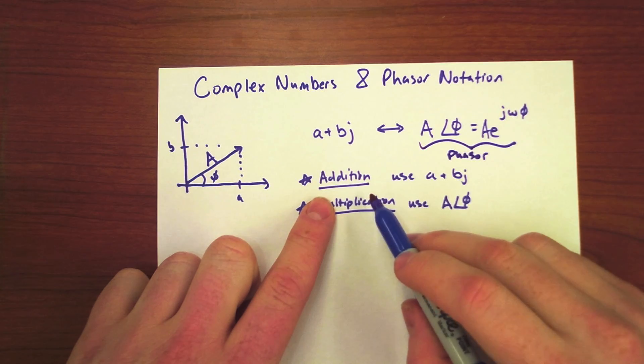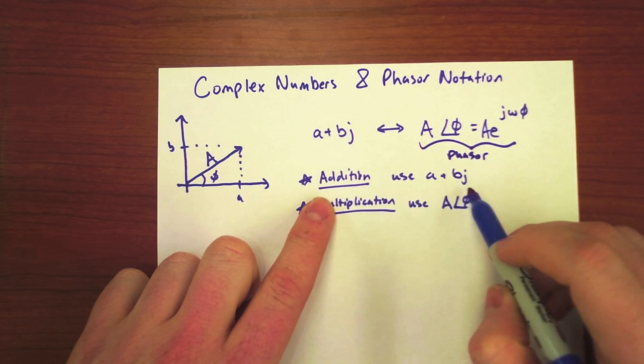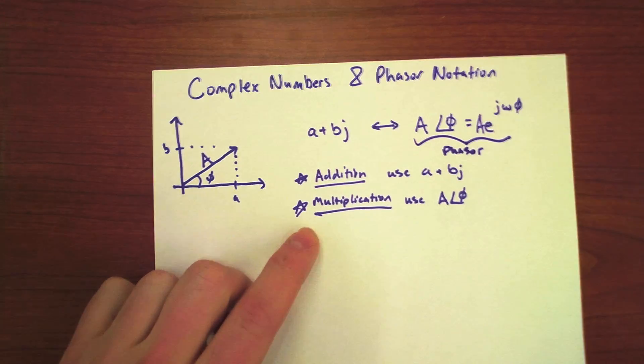It's important to know that when we're adding or subtracting, we're going to use a plus bj. It's very easy to just add the real parts and the imaginary parts together.